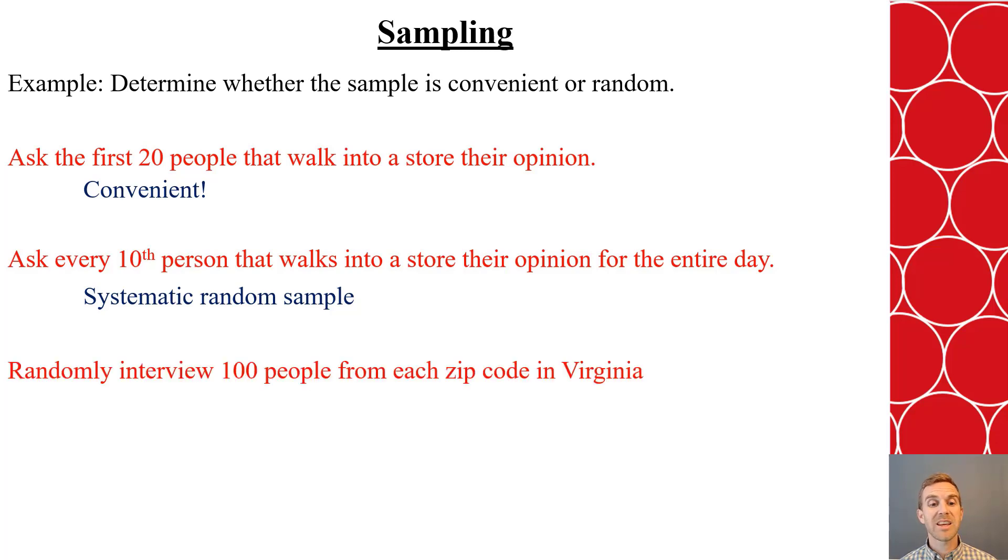How about if we randomly interview 100 people from each zip code in Virginia? Because we are splitting the groups by zip code, that makes it a stratified random sample because we have our groupings and then we're randomly sampling within that. And that is an effective method for doing random sampling.